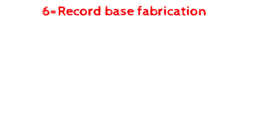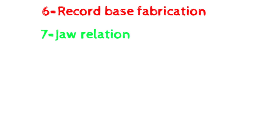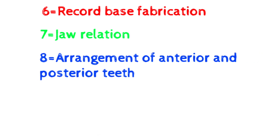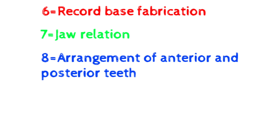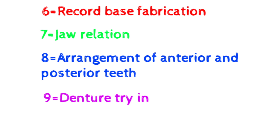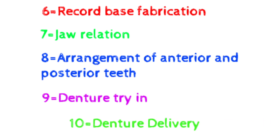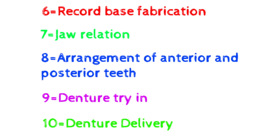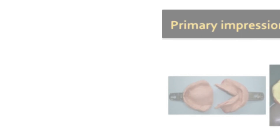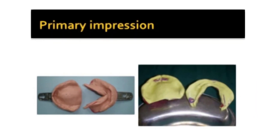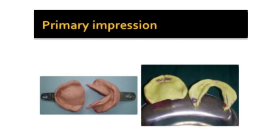On the master cast we make a denture base using base plate wax, and on this denture base we make an occlusal rim — this is the base plate occlusal rim. The seventh step is jaw relation: we take the jaw relation in the patient's mouth using this occlusal rim. Eighth is the arrangement of anterior and posterior teeth on the rim. Ninth is the denture try-in — we try the denture in the patient's mouth to check the occlusion. If there is any irritation we trim the denture. The last step is denture delivery — we insert and give the denture to the patient.